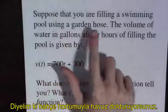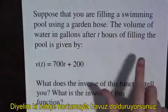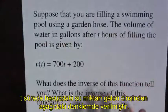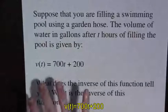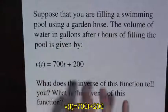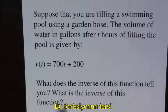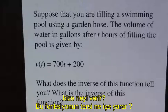Suppose you are filling a pool using a garden hose. The volume of water in gallons after t hours of filling the pool is given by v(t) equals 700t plus 200. What does the inverse of this function tell you? What is the inverse of this function?